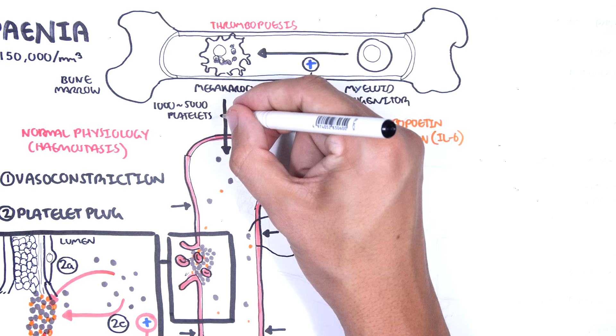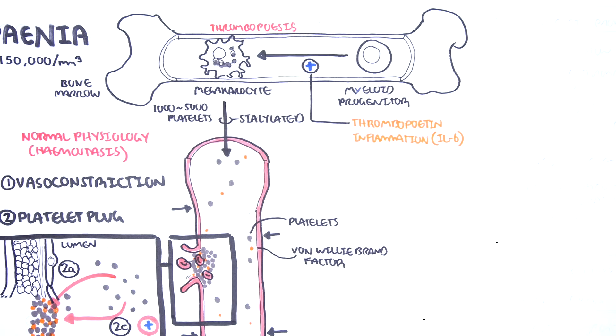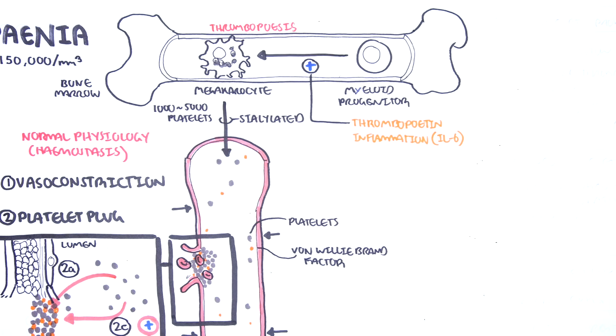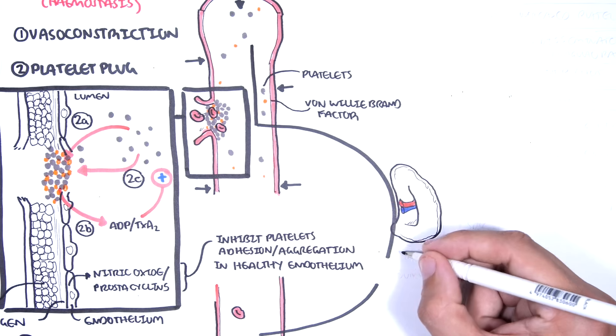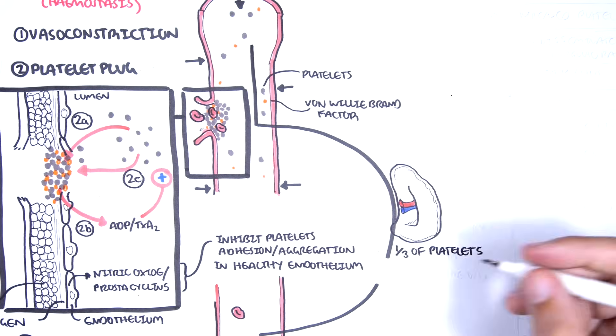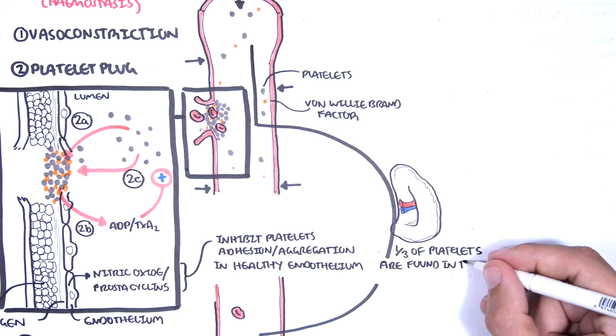When platelets are new, they are known to be reticulated. They contain sialic acid on their surface. Platelets enter circulation. At least one-third of platelets are sequestered in the spleen at any one time.